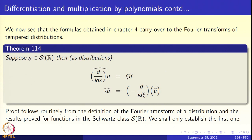This is summarized as theorem 114. Suppose u is a tempered distribution. Then as distributions, we have the following equalities. First: differentiating u with the factor i and then taking the Fourier transform equals multiplying u-hat by the coordinate variable χ. Second: multiplying u by χ and then taking the Fourier transform equals applying (1/i)(d/dx) to u-hat, except with a minus sign. The proofs are very routine and follow immediately from the definition of the Fourier transform of a tempered distribution, using the corresponding formulas for the Schwarz class established in chapter 4.